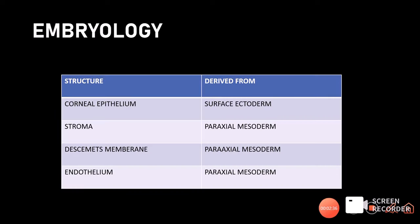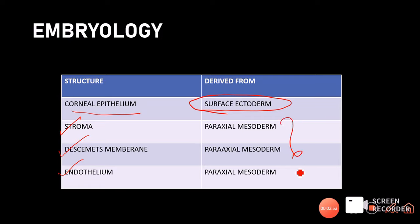Regarding embryology: the corneal epithelium is derived from the surface ectoderm, while the remaining layers — the stroma, Descemet's membrane, and the endothelium — are all derived from the paraxial mesoderm. So it is only the epithelium which is ectodermal; the remaining layers of the cornea are mesodermal in origin.